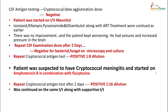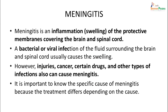This was a different kind of case from acute meningitis, which is why we thought of discussing it. Meningitis is an inflammation or swelling of the protective membranes covering the brain and spinal cord. A bacterial or viral infection of the fluid surrounding the brain and spinal cord usually causes the swelling. However, injuries, cancer, certain drugs and other types of infection can also cause meningitis. It is important to know the specific causes because the treatment differs depending on the cause.